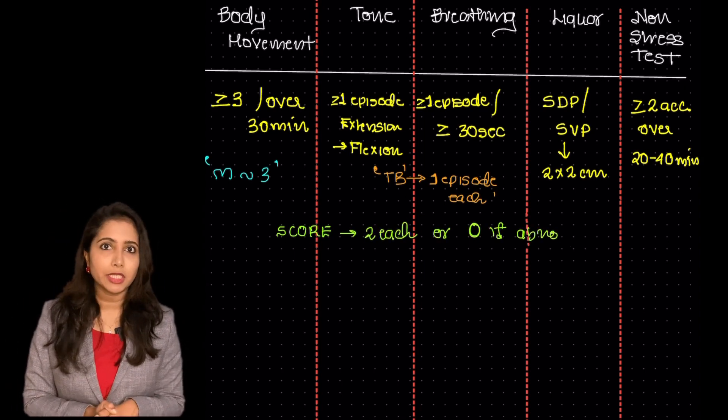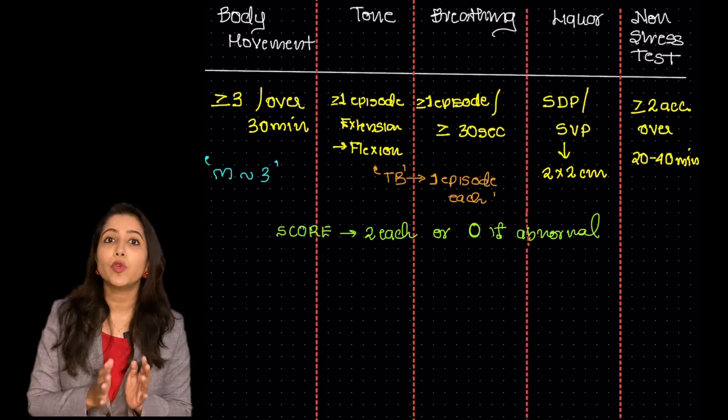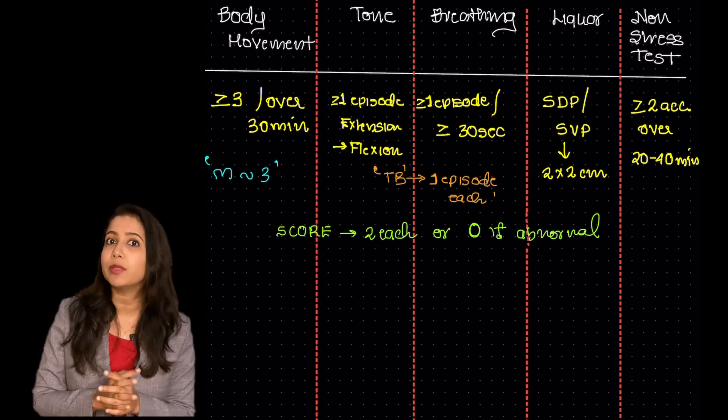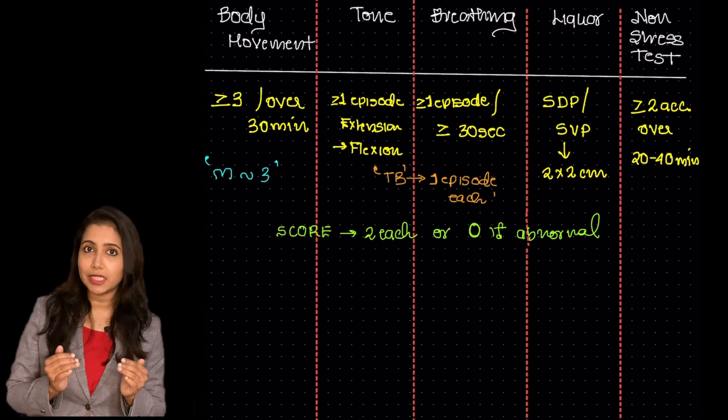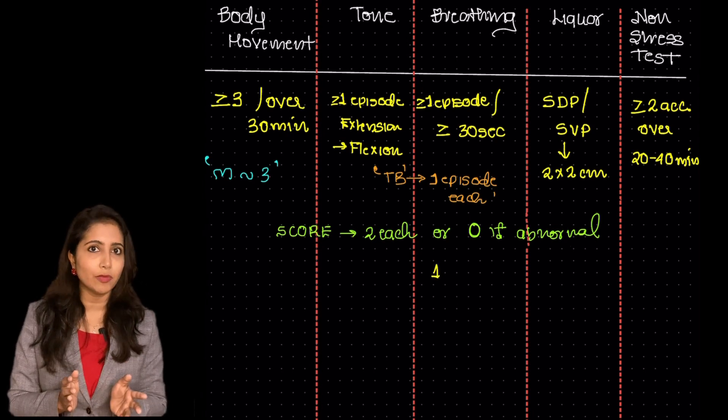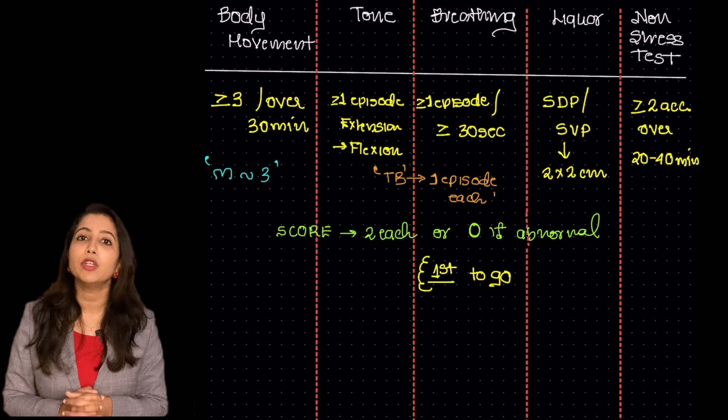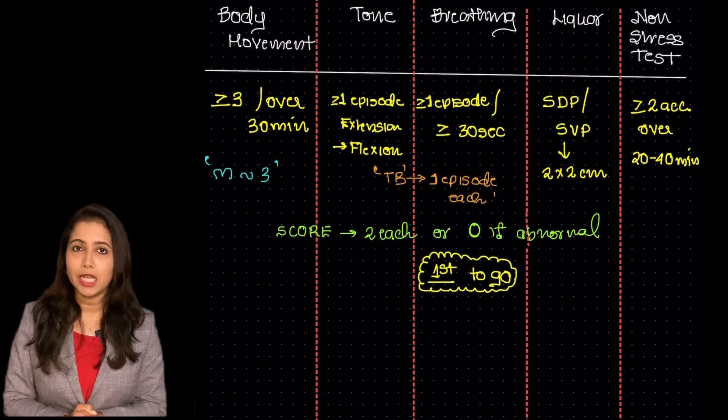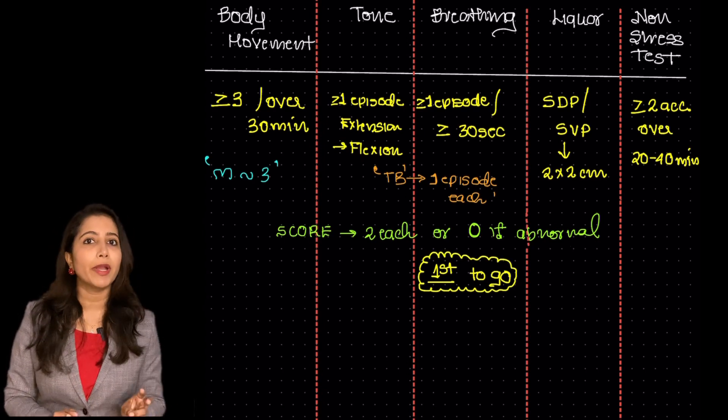In this, it is very important to note that the first parameter that would be going in this is the breathing movements. Because in the fetus, the breathing center is very sensitive and that is the first thing that is going to be gone in the biophysical profile. It is breathing followed by gross body movements followed by tone.